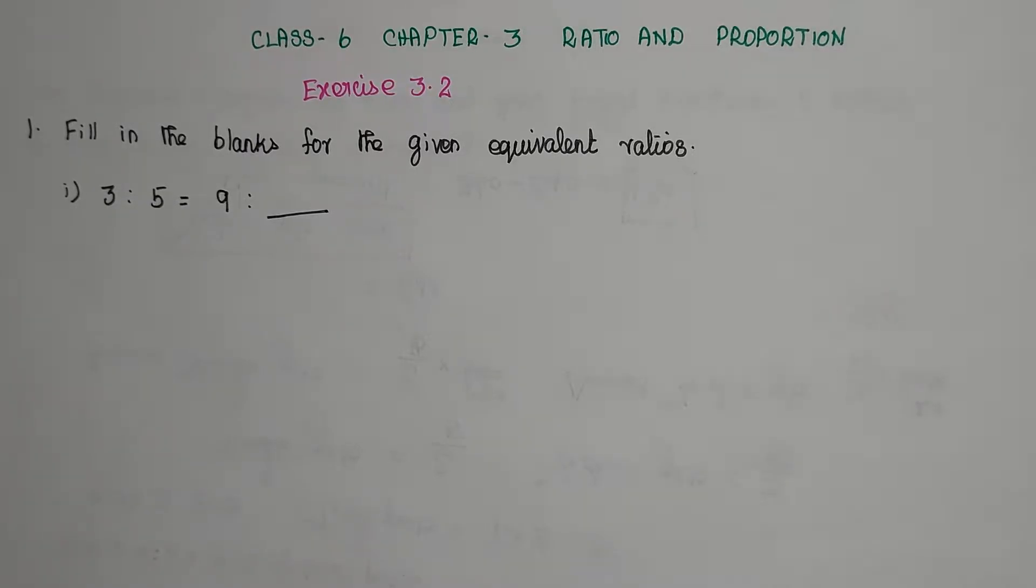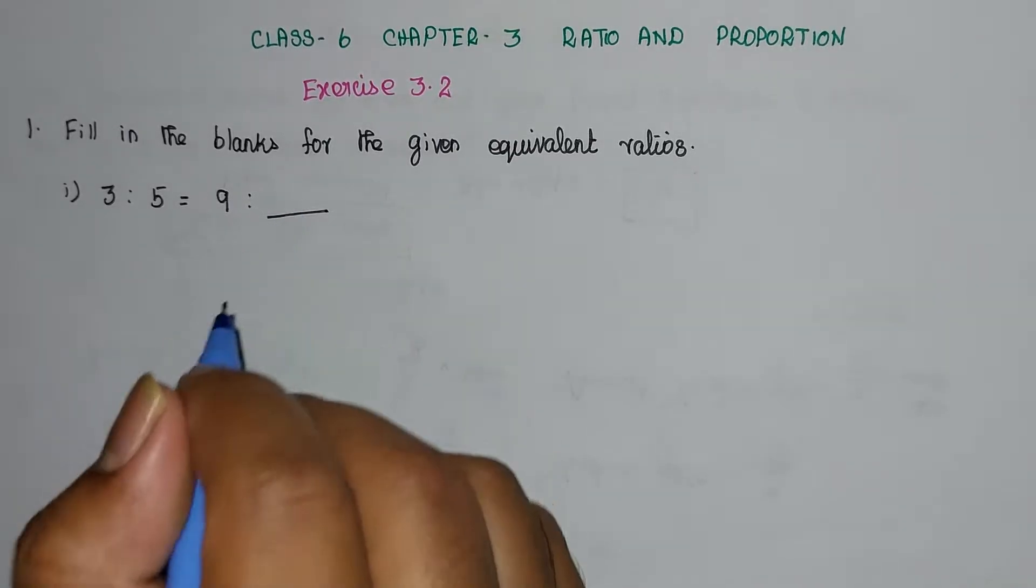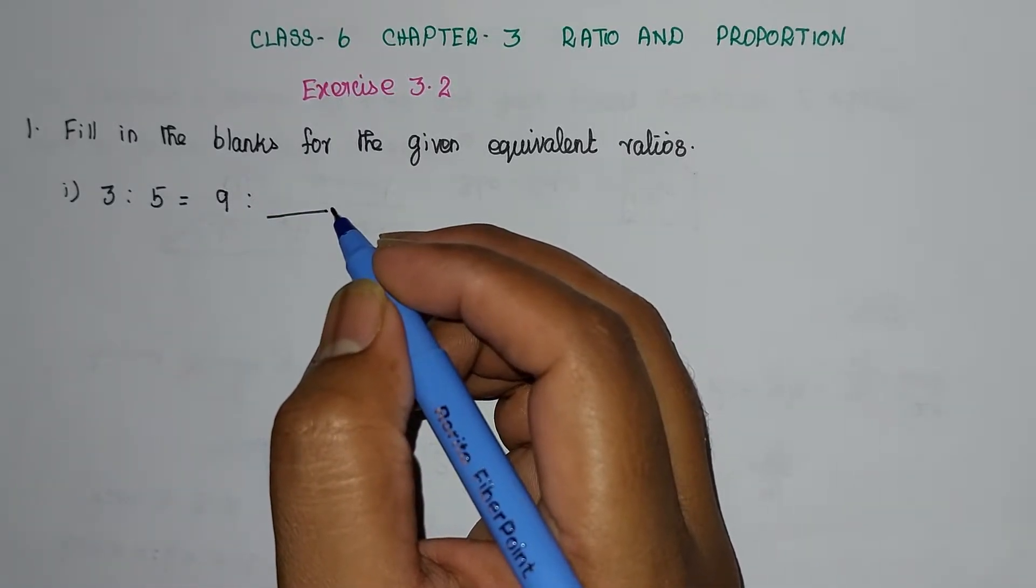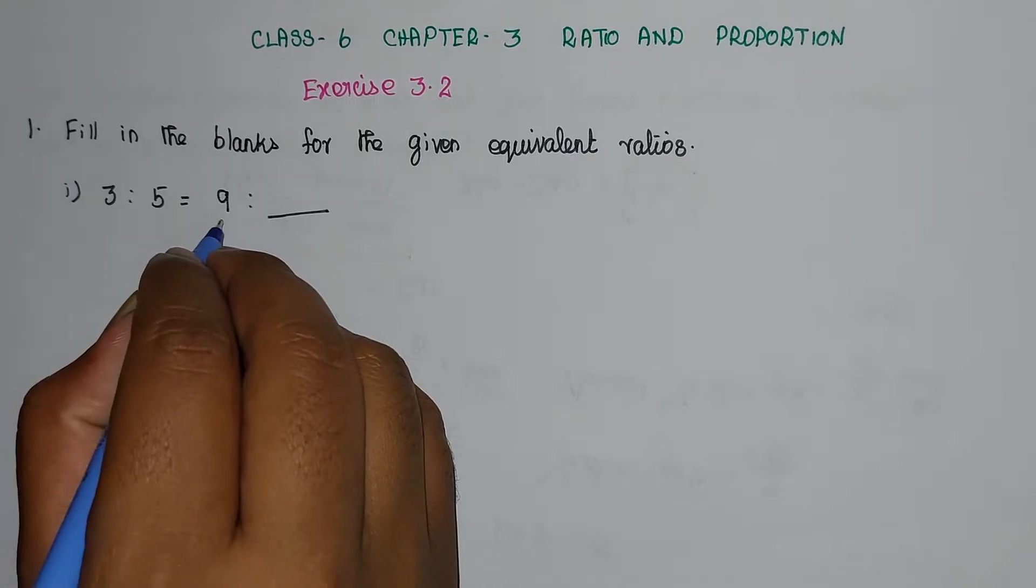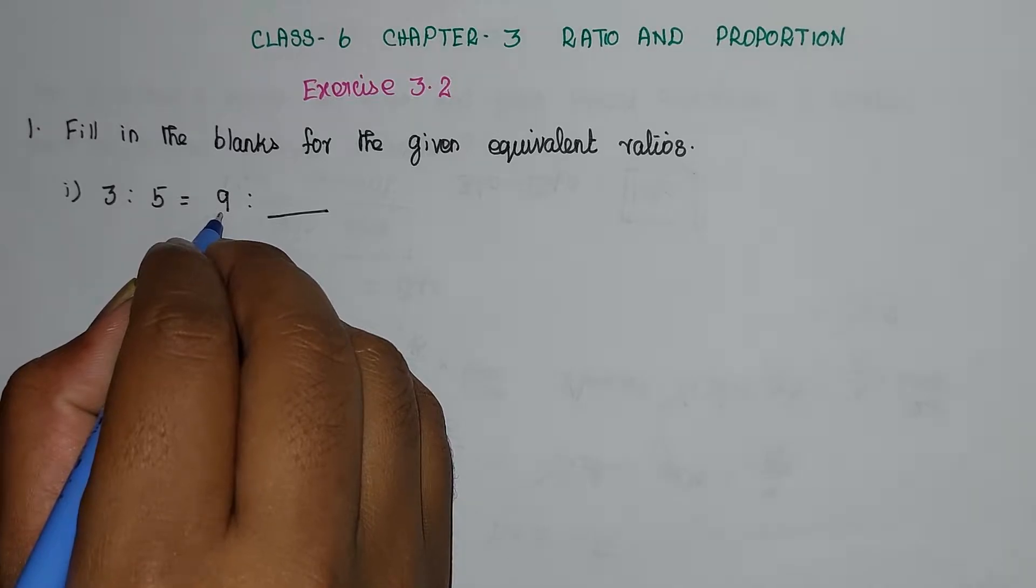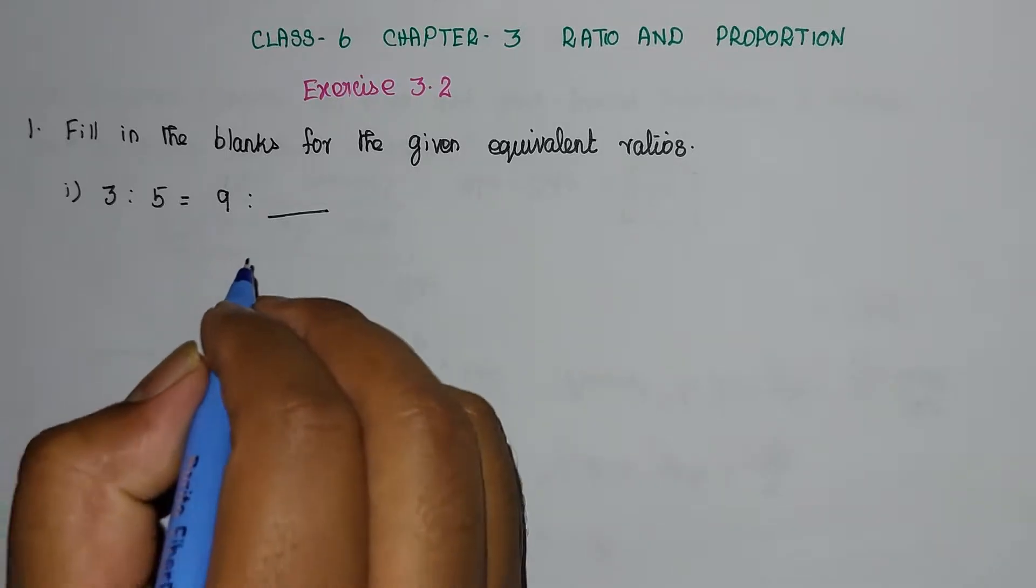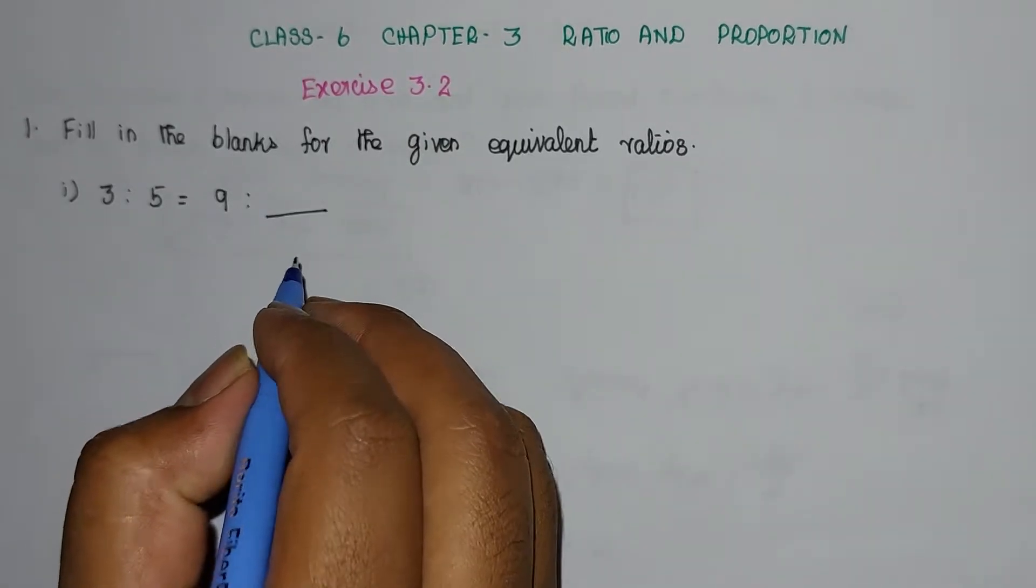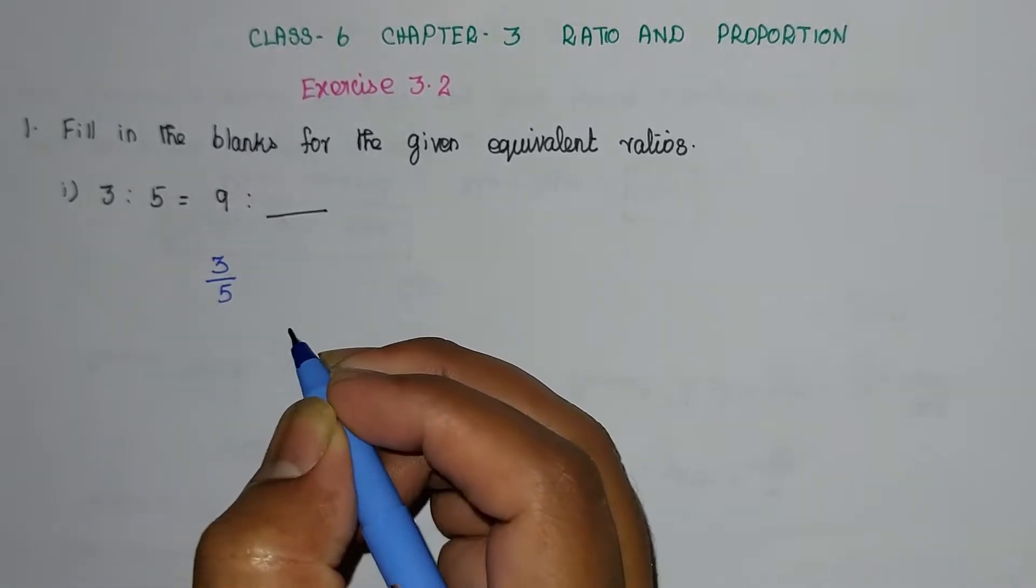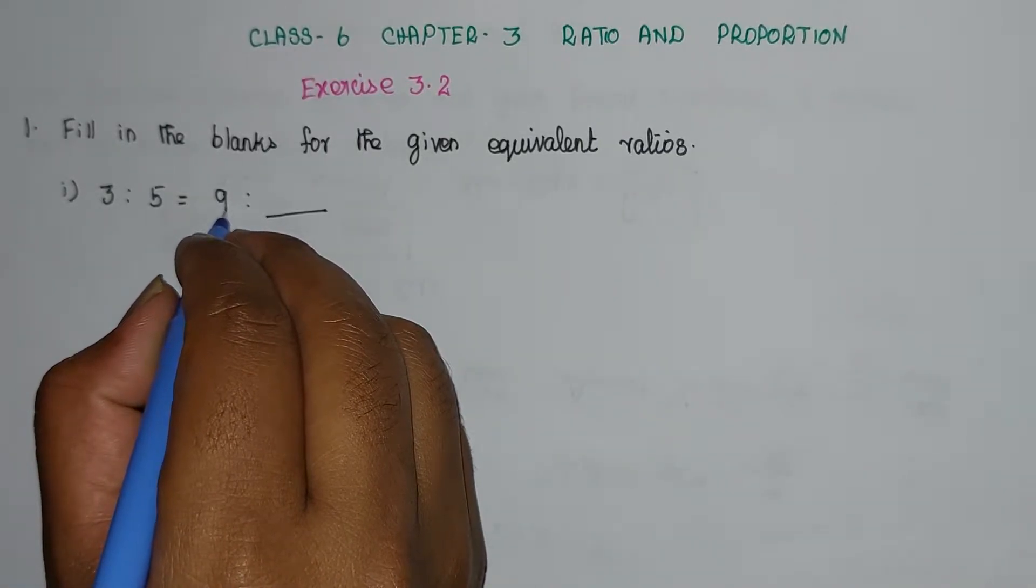Subdivision 1: 3 is to 5 equal to 9 is to blank. We need to find the missing value. For equivalent ratios, we multiply or divide both numerator and denominator by the same number. 3 is to 5, written as fraction 3/5. Right hand side is 9.